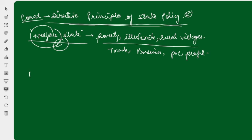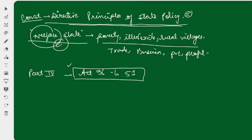Now some facts: DPSP is Part 4 of the Indian Constitution, present in Article 36 to Article 51. I will tell you all the articles. Where was DPSP borrowed from? The concept has been borrowed from the Irish Constitution.